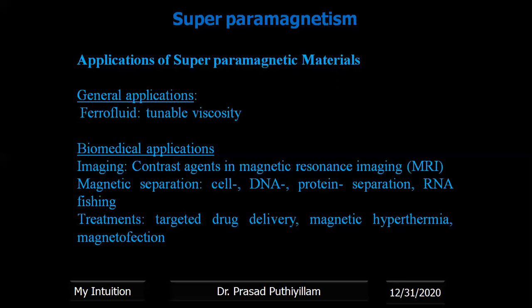Targeted drug delivery is a type of supplying the drug to a targeted cell or a targeted area in the body. In normal drug delivery systems, we consume the drug and it passes through the bloodstream and reaches the site where it has to act. Whereas with superparamagnetic materials, which can be controlled with an external magnetic field, the drug-infused material travels through the living system and is delivered precisely to the target site where the medicine effect is required. This type of drug delivery is known as targeted drug delivery.